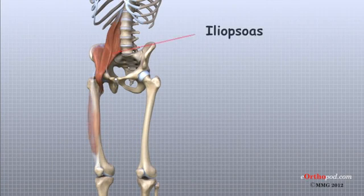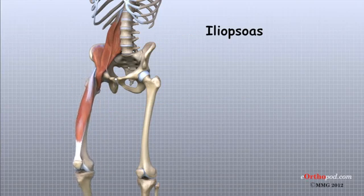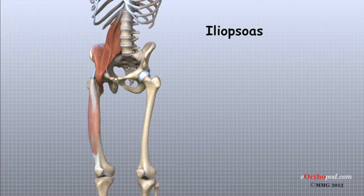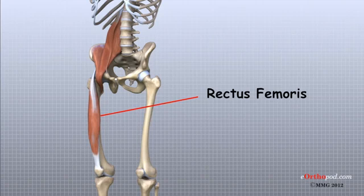These include the iliopsoas and the rectus femoris. The iliopsoas muscle is a very deep muscle that begins attached to the lower spine. It travels out of the pelvis to connect on the inside edge of the upper femur. The rectus femoris is one of the quadriceps muscles, the large group of muscles on the front of the thigh.